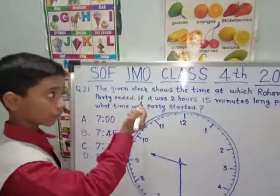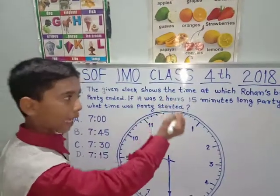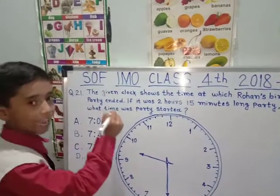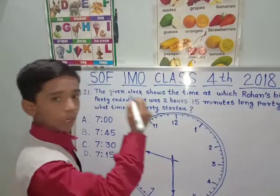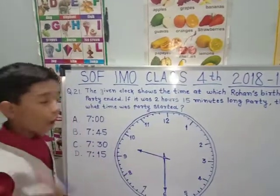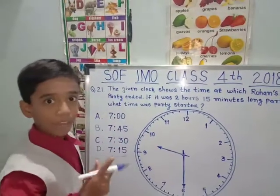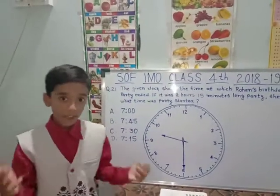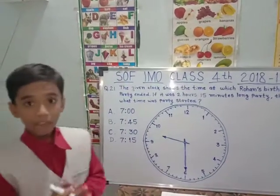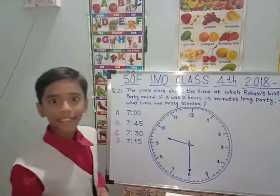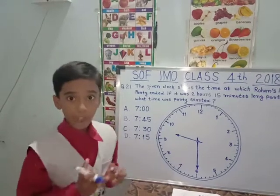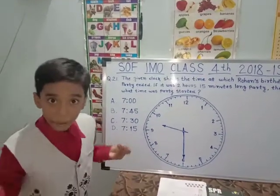The given clock shows the time at which Rohan's birthday party ended. If it was a 2 hours 15 minutes long party, then at what time was the party started? They have asked: what is the time shown on the clock when the party ended? So we have to find when the party started.